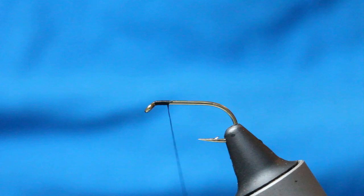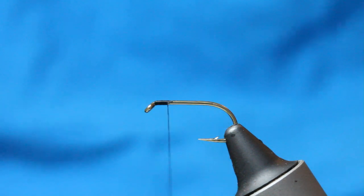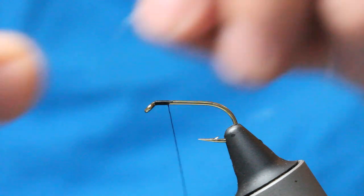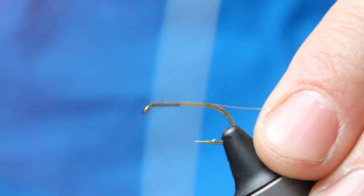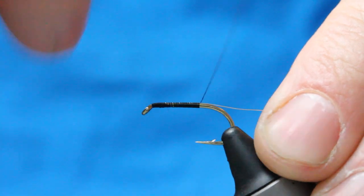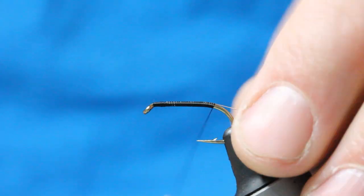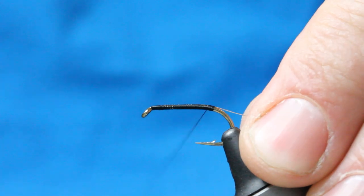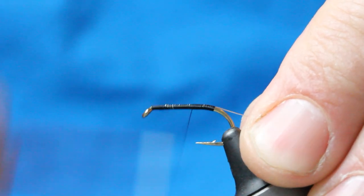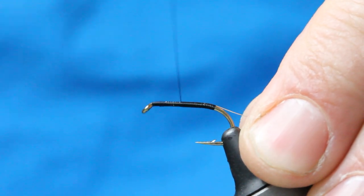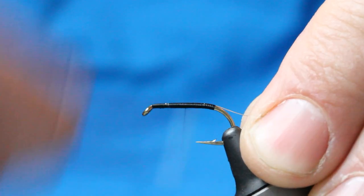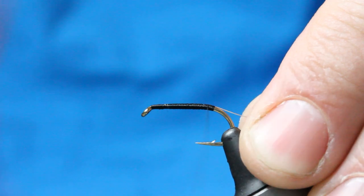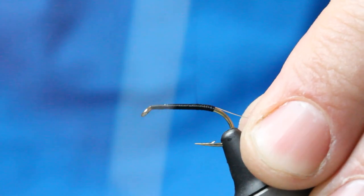I've then got this really fine French silver wire. I'm going to catch that in at the top there, winding down in touching turns as close as you dare. Just come around the bend, back up. I'd like to do a couple of up and down the body on this, just in case I get any gaps.